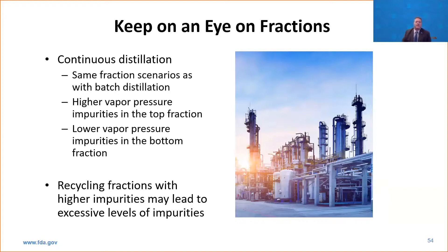With continuous distillation, the same scientific principles apply regarding vapor pressures and boiling points, but it comes down to which fractions you're pulling out of the column. Some columns are simple with just a top and bottom; others can have a whole bunch of layers — like petrochemical cracking columns with 10 or 12 different streams. Higher vapor pressure impurities end up in the top fraction, lower ones in the bottom. When there's a lot of recycling with continuous distillation, you may need to consider whether recycling fractions will lead to higher impurities down the line.